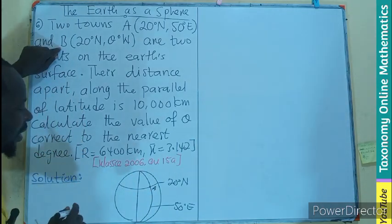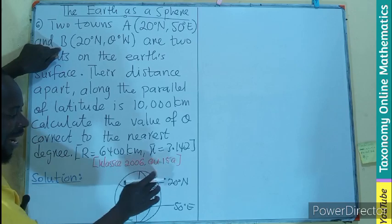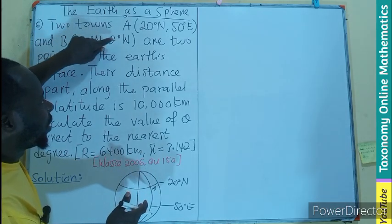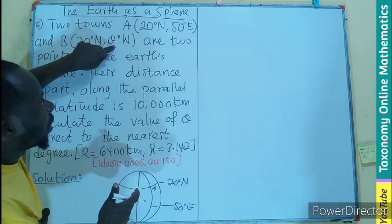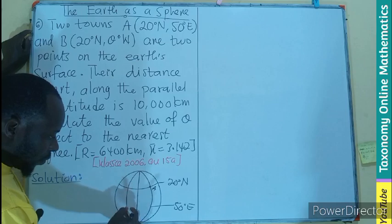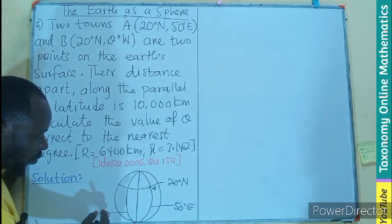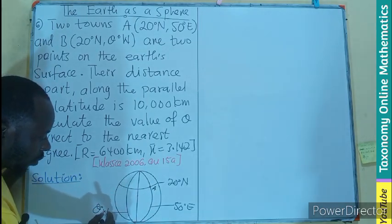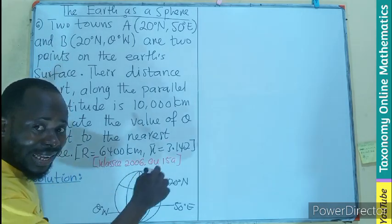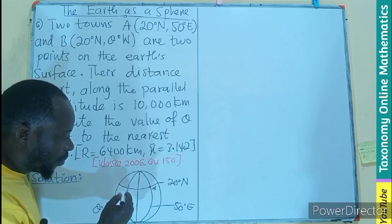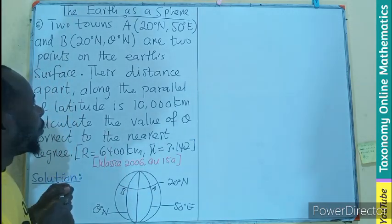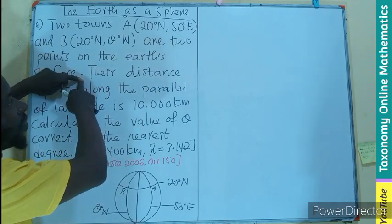Then for town B it is still on latitude 20 degrees. Then theta is going to be the longitude towards the west. So I can also draw this and label this one to be theta degrees to the west. And that is the longitude. Now the intersection of the latitude and the longitude give us the position of the town B.